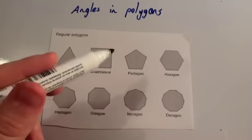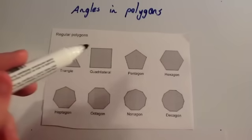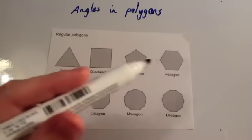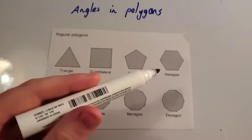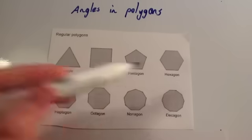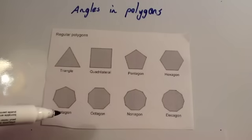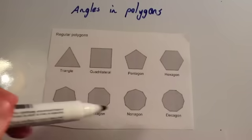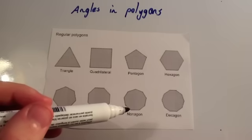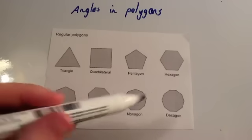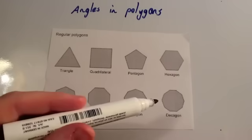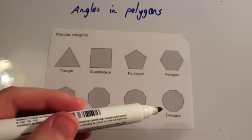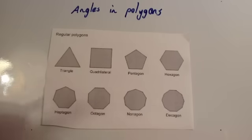A quadrilateral would be a square — all the angles are the same, sides are the same. Regular pentagon: 5 sides. Regular hexagon: 6 sides. Regular heptagon: 7 sides. Regular octagon: 8 sides. Regular nonagon: 9 sides. And regular decagon: 10 sides.